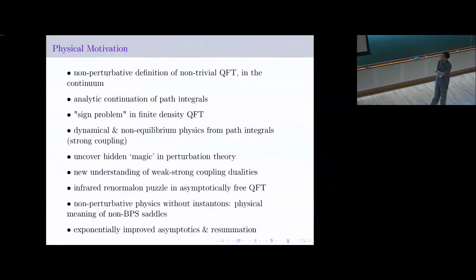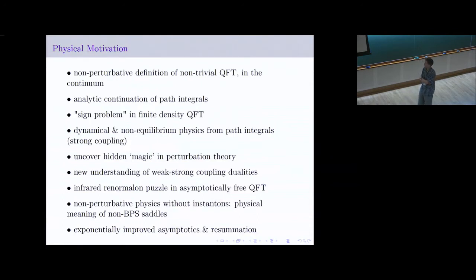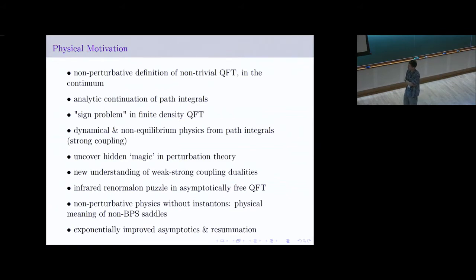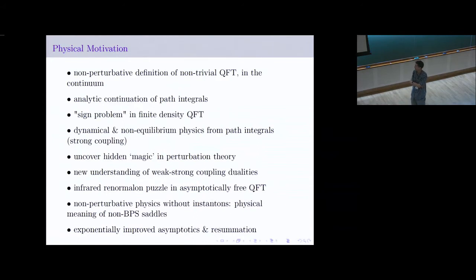More specific questions I'll mention as we go along: the infrared renormalon problem, and what to make of non-BPS saddle solutions that exist and are somewhat mysterious from the physics point of view, until you look at them through the lens of resurgence. There's also the more mathematical question of how to do improved resummations when you only have access to some piece of information, not the whole series.